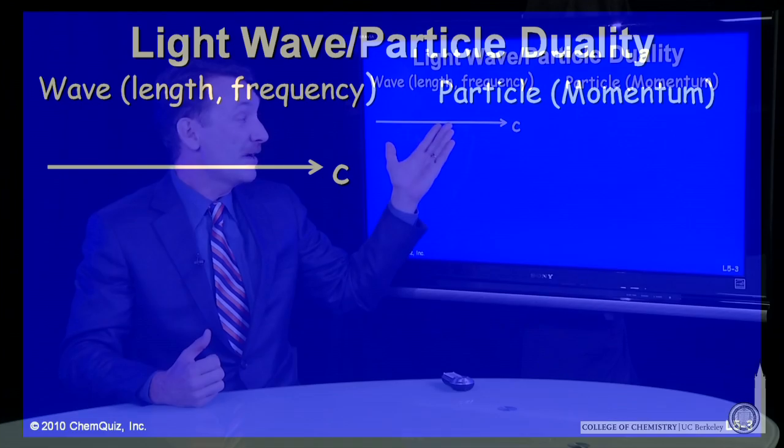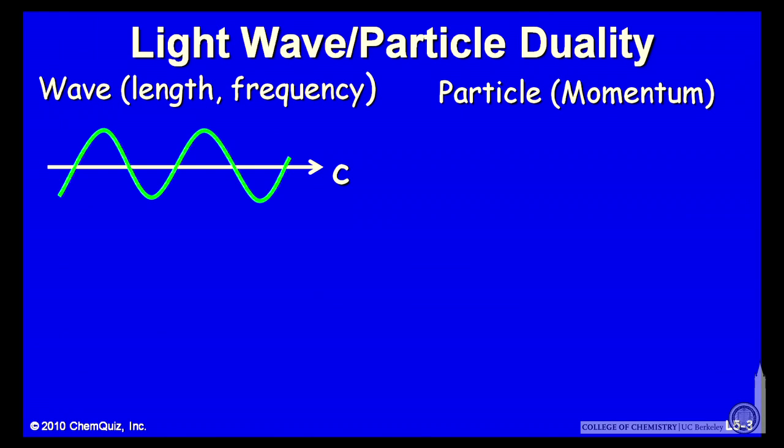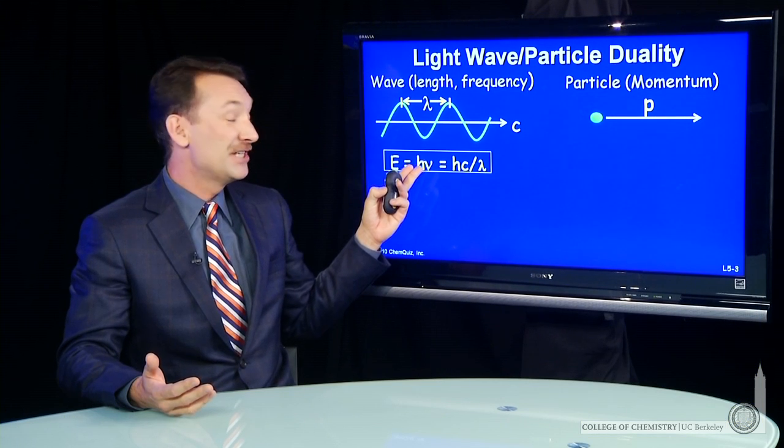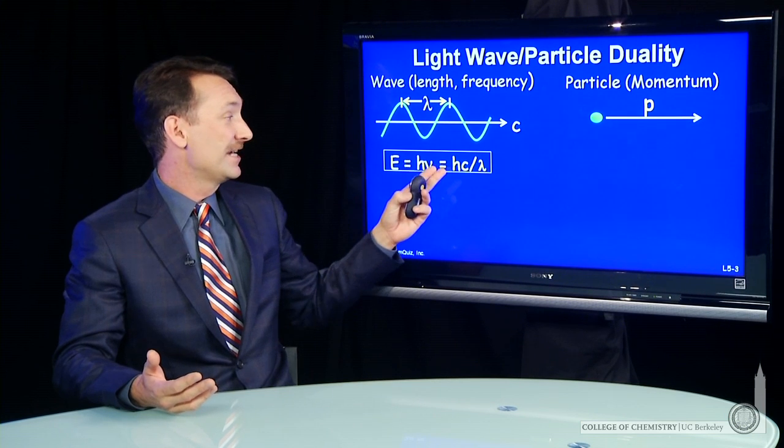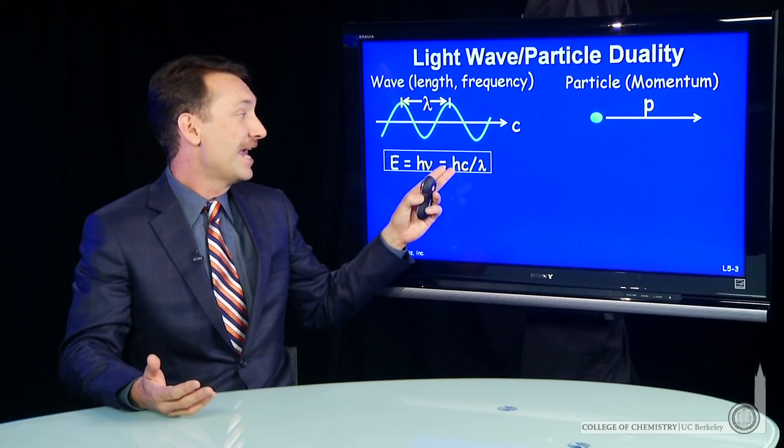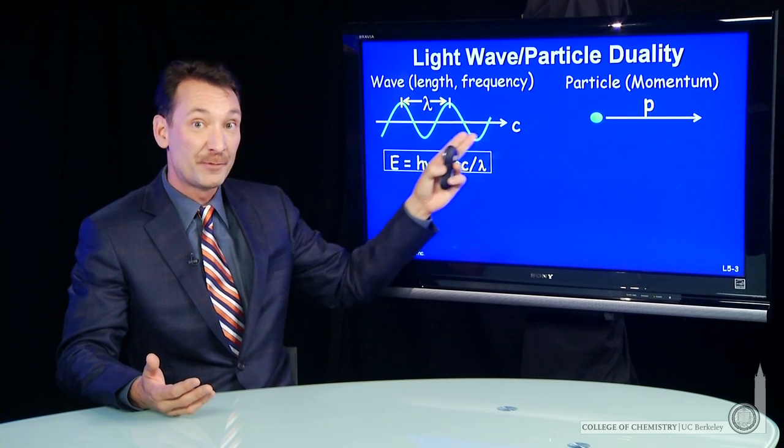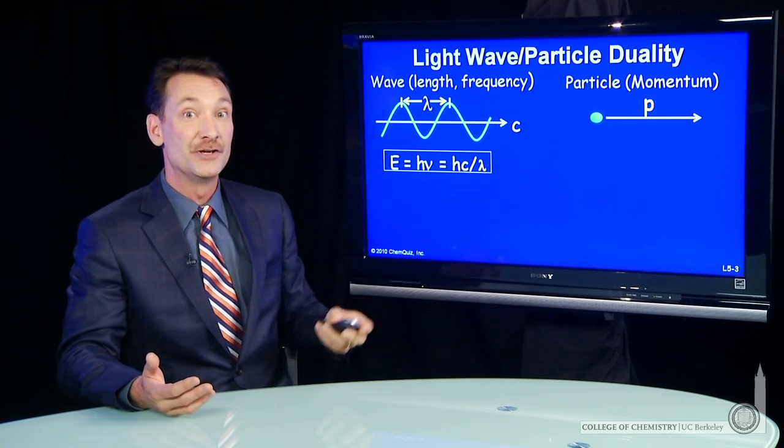If light behaves like a wave, with a wavelength and a frequency and a speed, we can write down its energy as a particle, as h times nu, and h times c over lambda, using the wave properties to write the energy in two different ways.